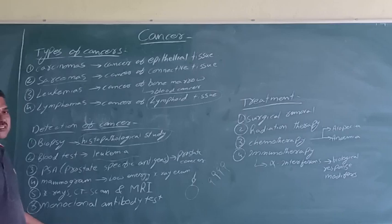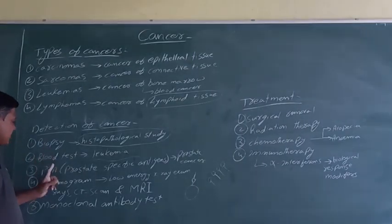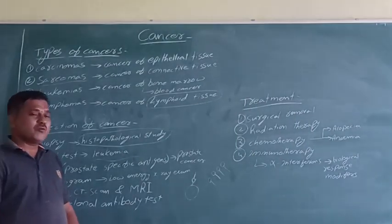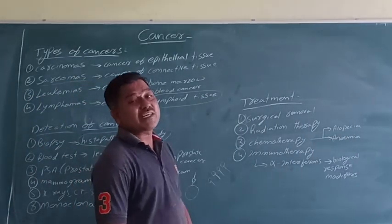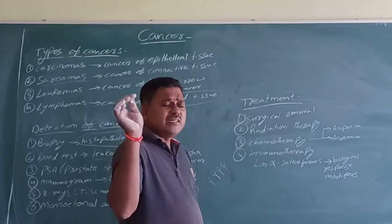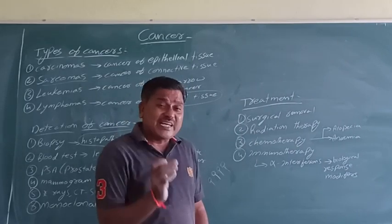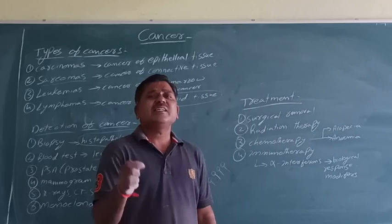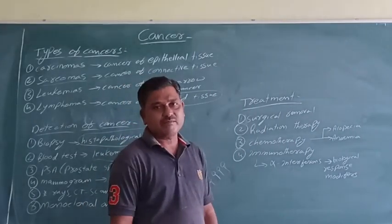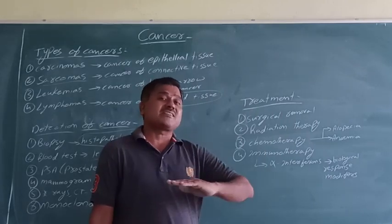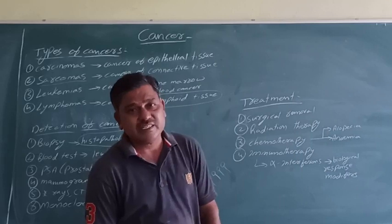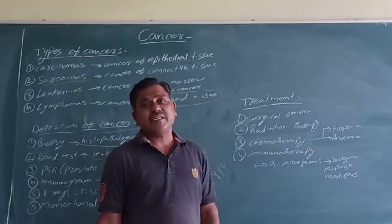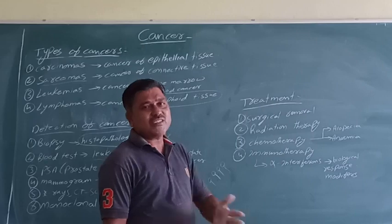So, these are the number of methods for detection and diagnosis of cancer: biopsy, blood test, prostate-specific antigen test, mammogram, X-ray CT scan MRI, monoclonal antibody test. Now we will go for treatment of cancer. Once cancer occurs, if there is early diagnosis and detection, confirmed treatment can occur. But when cancer is present in a late stage, treatment is not possible and it leads to death of the individual. Early detection — treatment is possible; late detection — treatment is not possible.